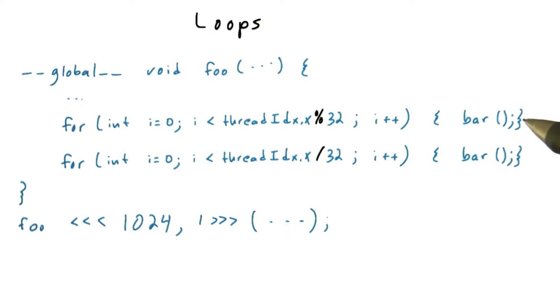So for both of these loops, assume that this function bar is what's going to take the most time, that all these calls to bar are going to dominate the total time spent in foo.